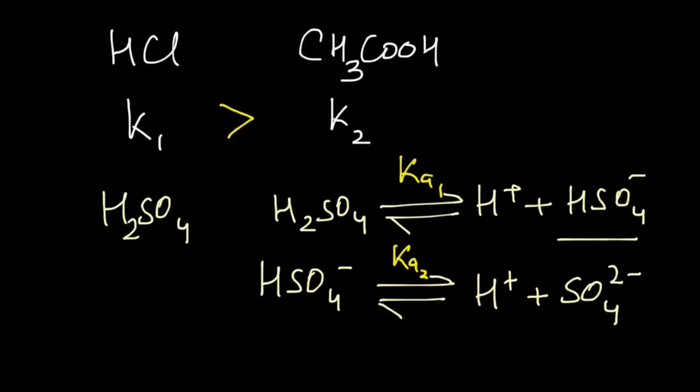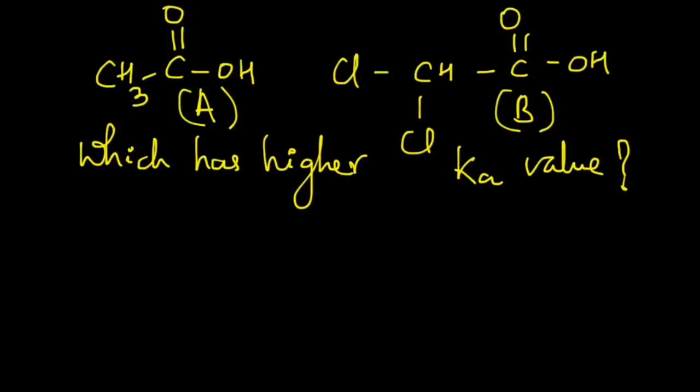Now that we understand the meaning of Ka, let's use it in some questions. So we have two acids over here. One is acetic acid and another is its chloro derivative.